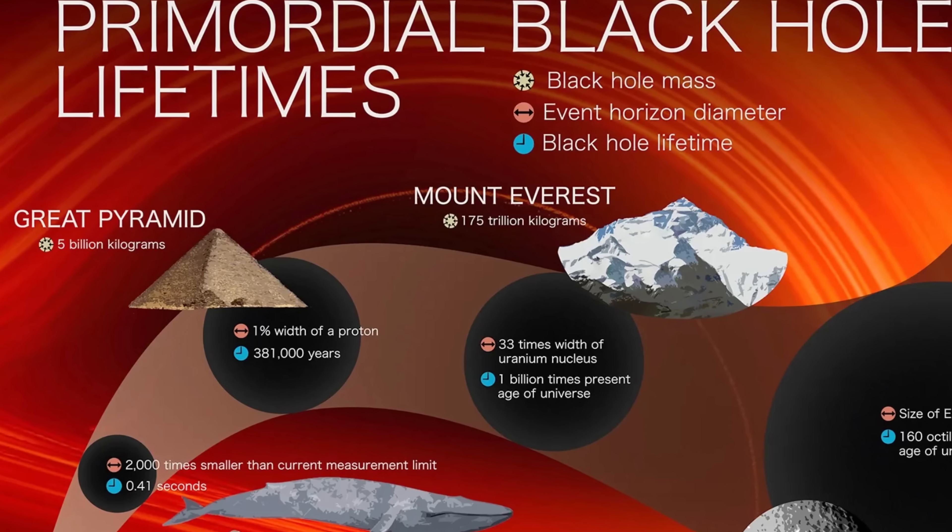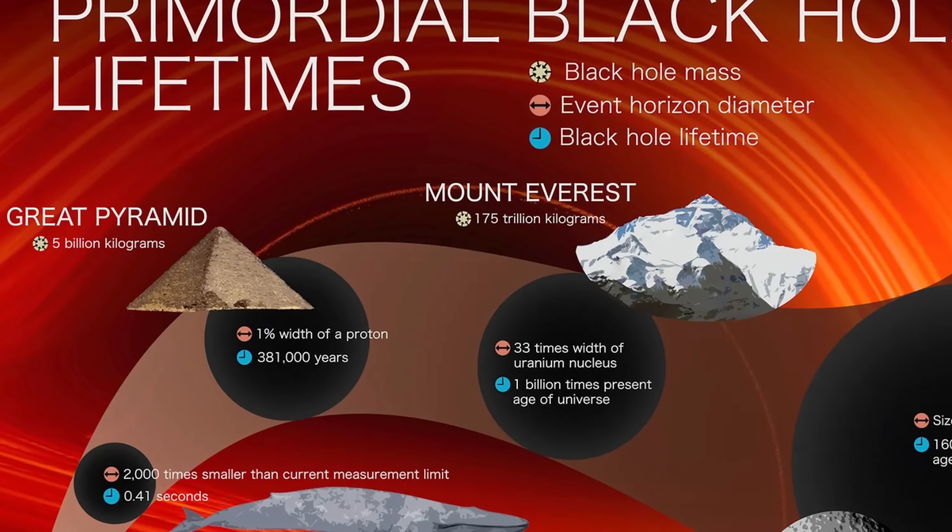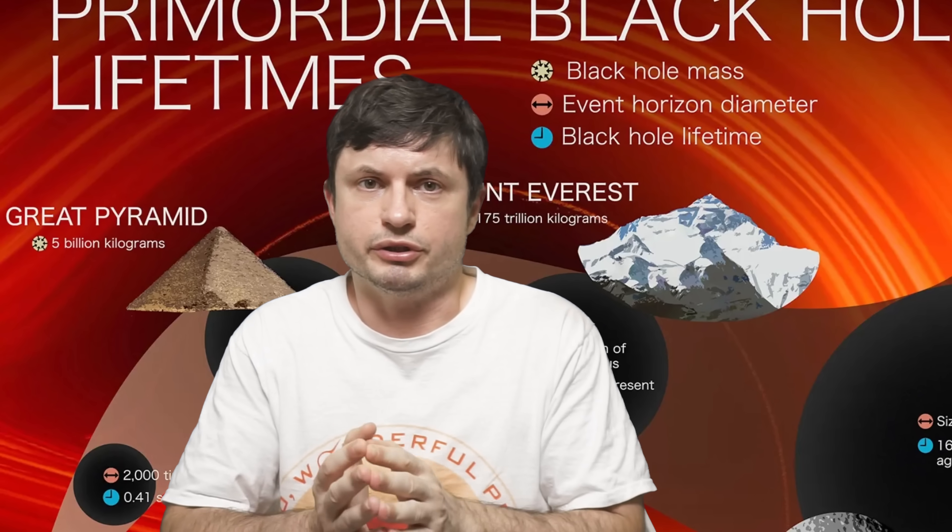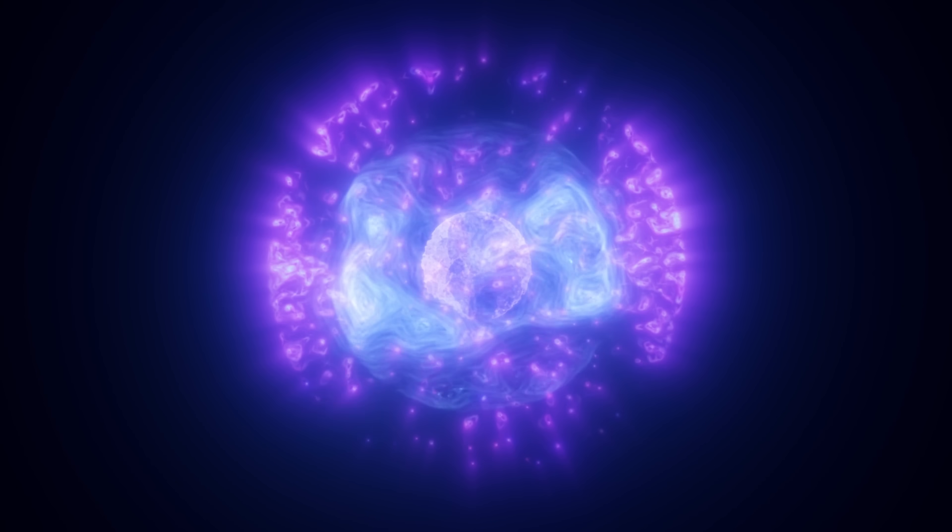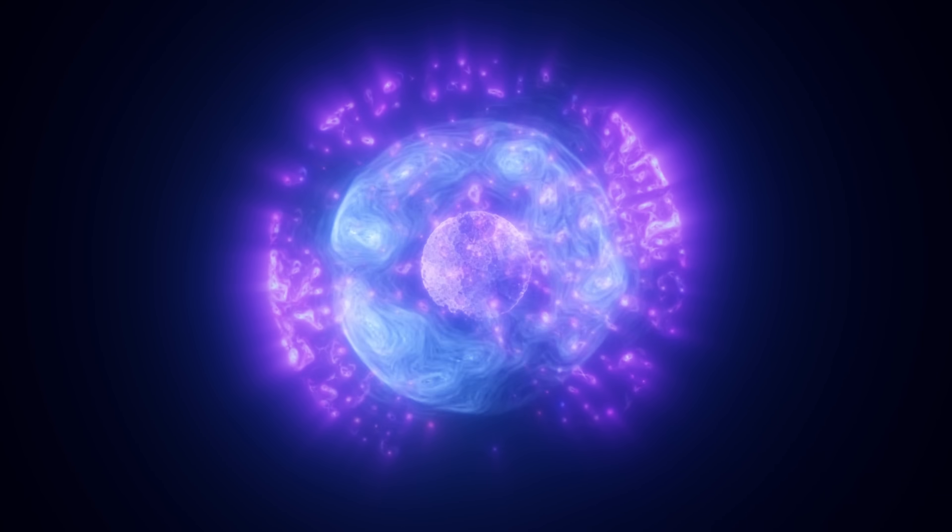And so on the smaller end, if you have a Great Pyramid mass black hole, it's only going to survive for 381 thousand years, but it's also going to be ridiculously tiny, one percent of a proton. And the smaller the black hole, the faster it evaporates and the more energy it starts to release.